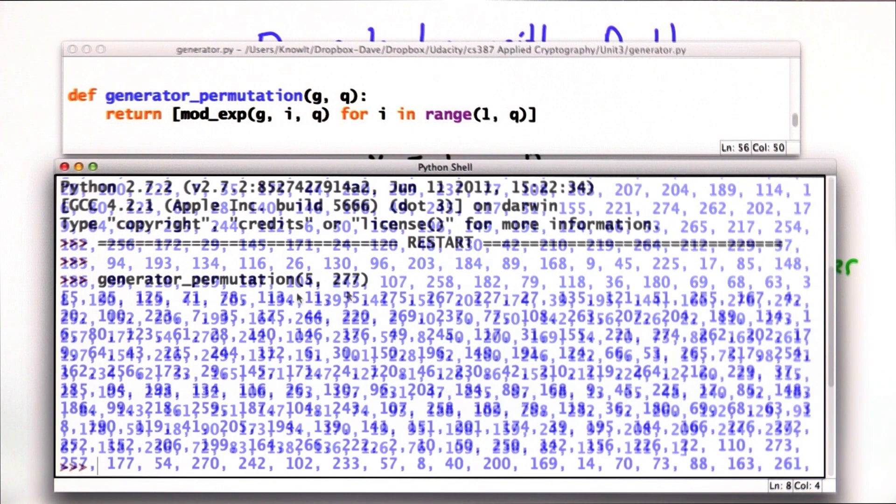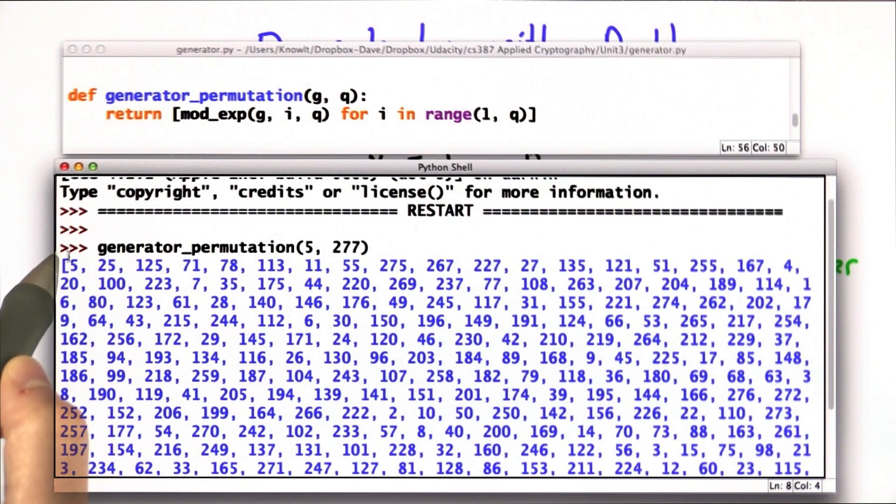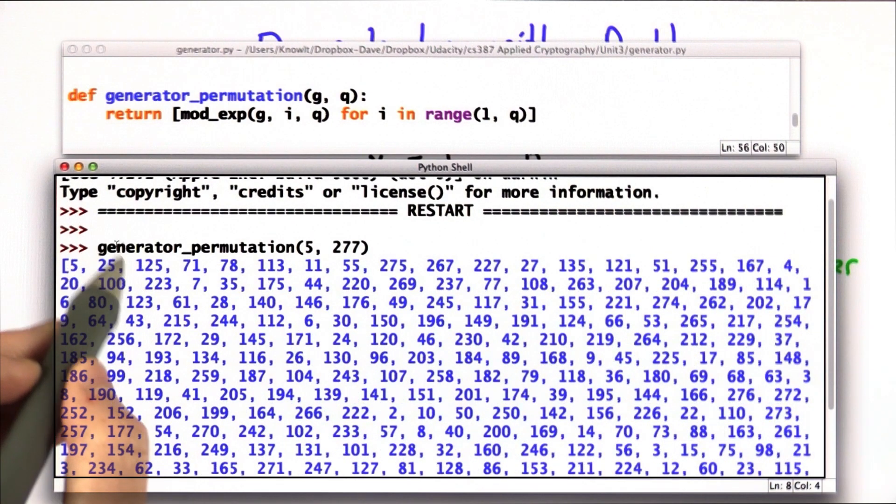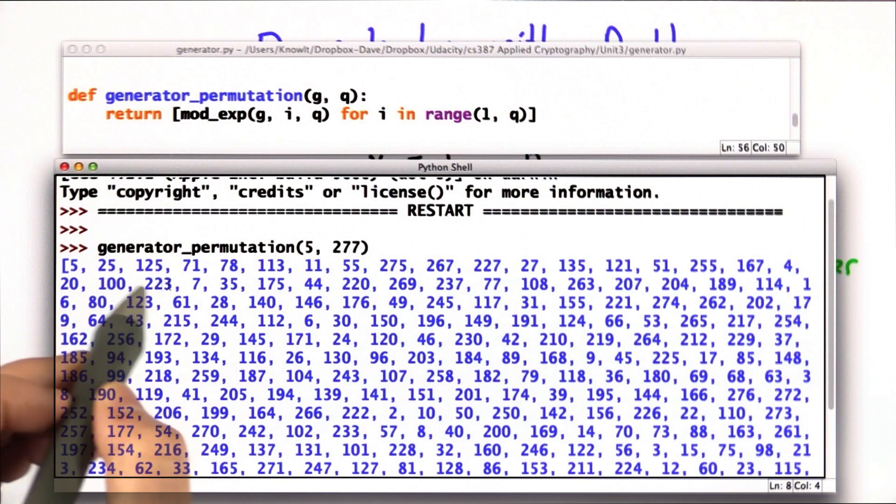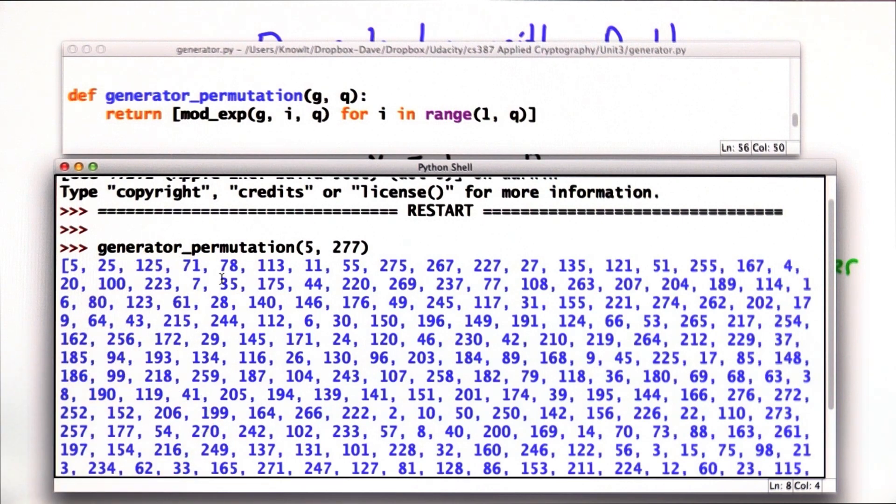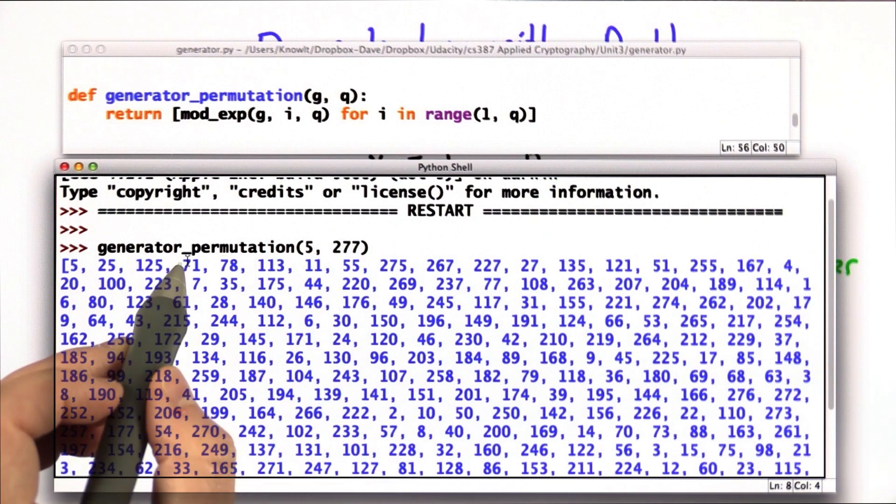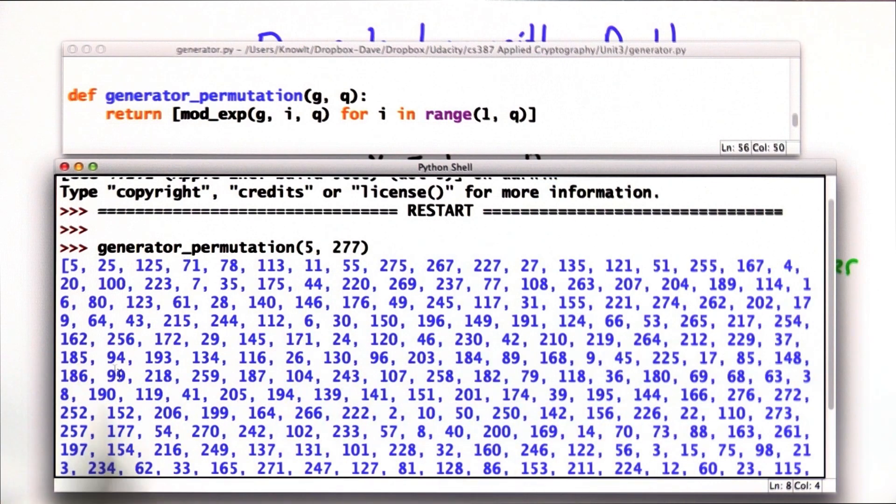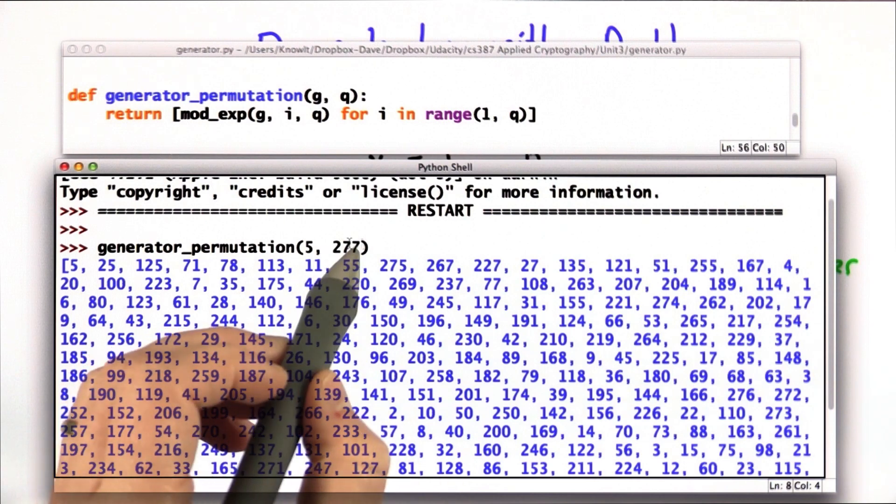These are the results. And you can see the first one is 5, that's 5 to the 1, 25 is 5 to the 2, 125 is 5 to the 3. The next one is 71, because 5 to the 4, mod 277 is 71. And if we look at all the numbers here, it would be a permutation on the numbers from 1 to 276.